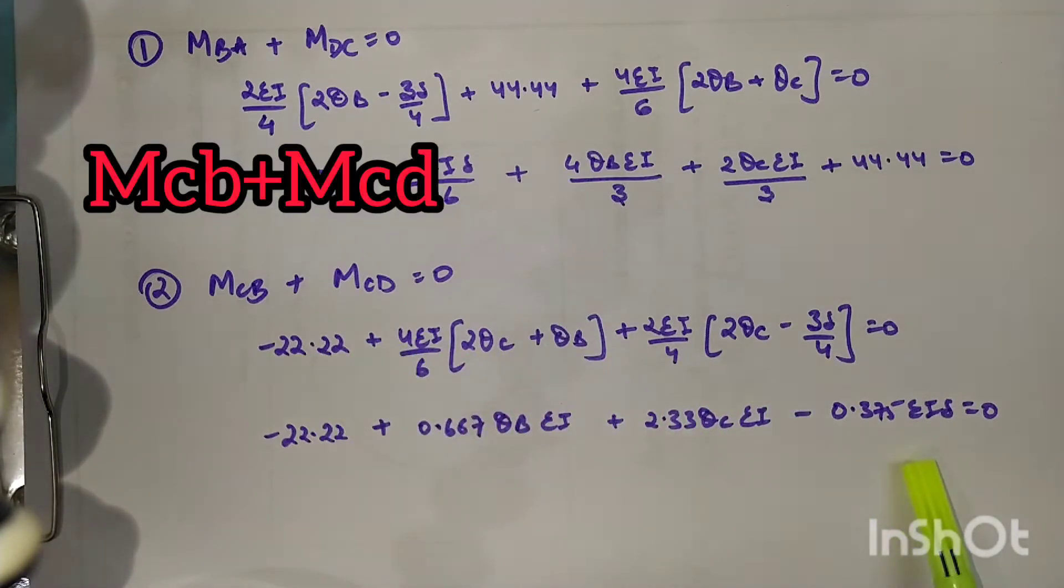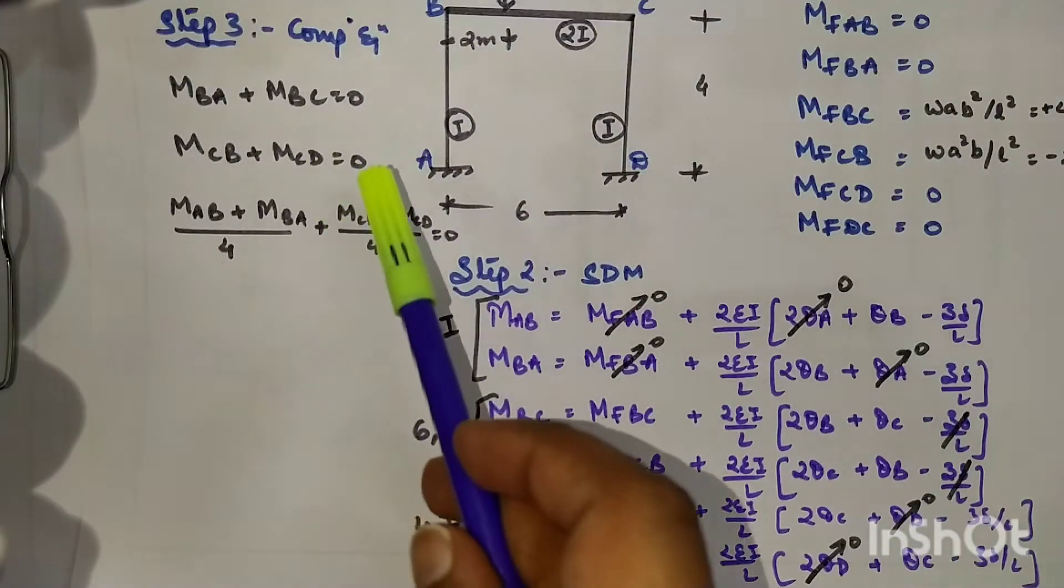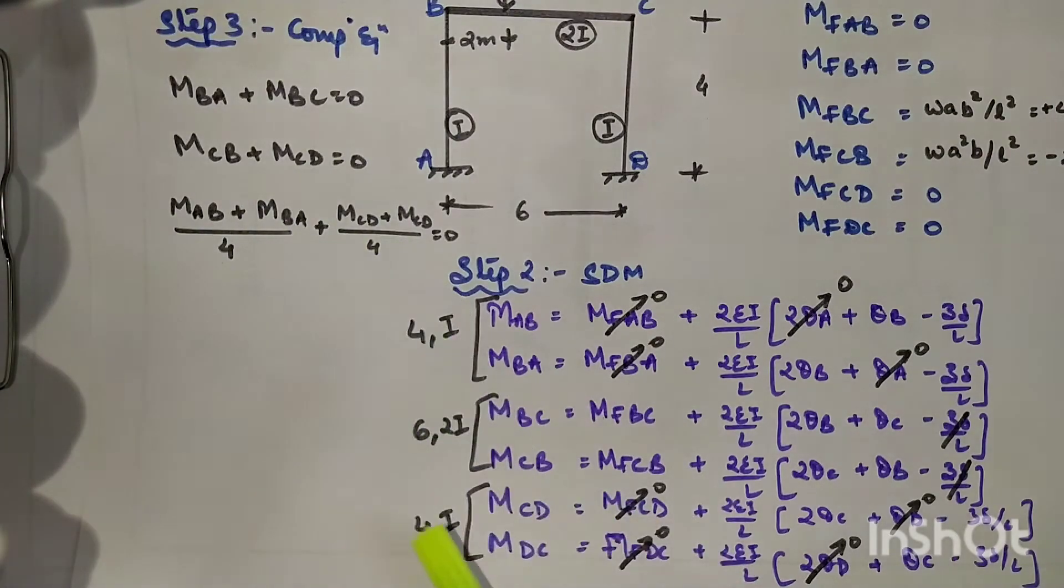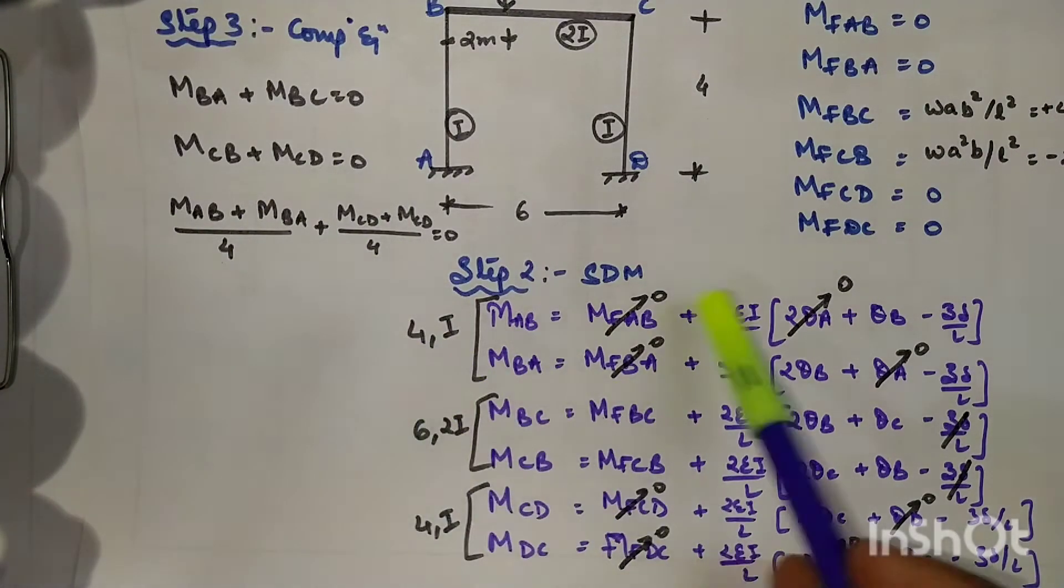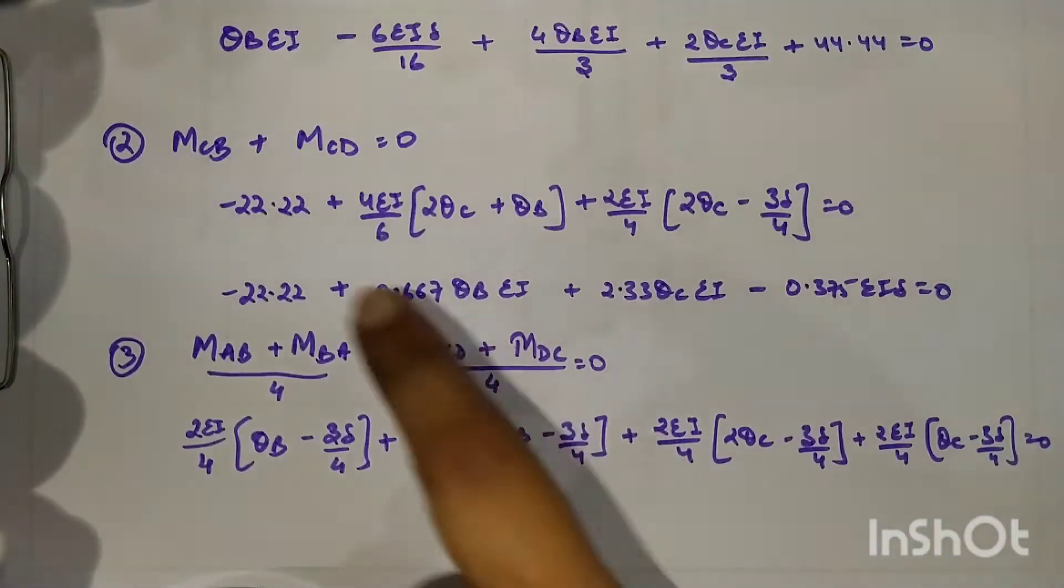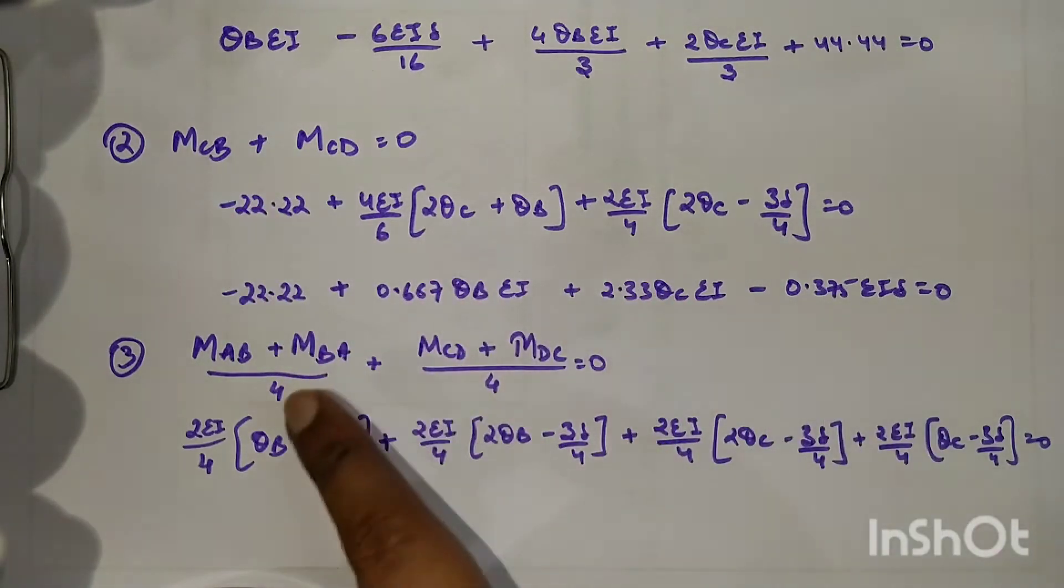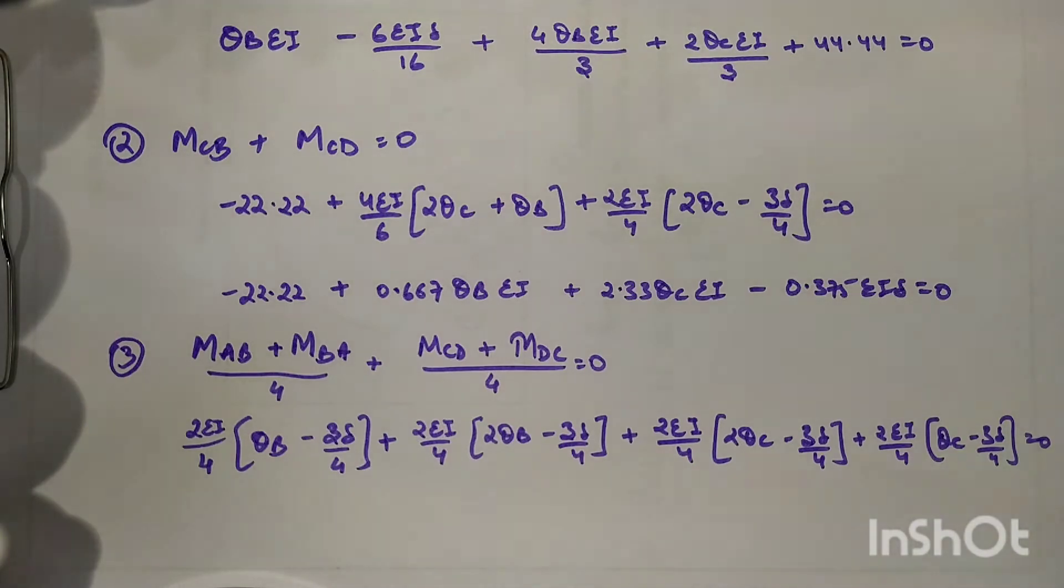Next MCB plus MCD. Coming to the third compatibility equation of the vertical members, we will be substituting the values here. Here we have substituted all the values with theta B, theta C, and delta.